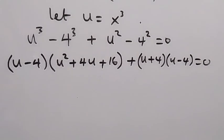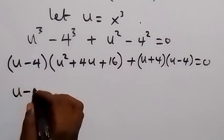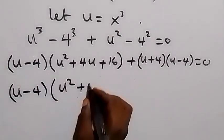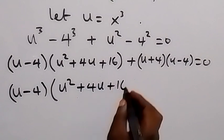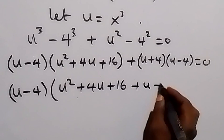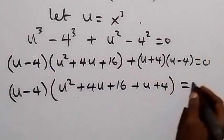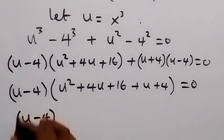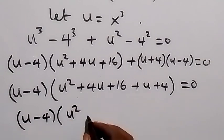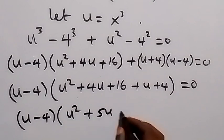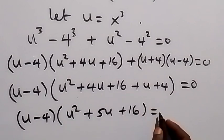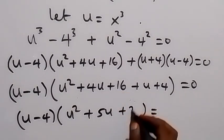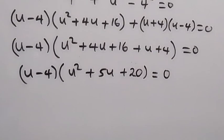We can see that (u minus 4) is a common factor. Taking it out, we have (u minus 4) times (u² + 4u + 16 + u + 4) equals zero, which simplifies to (u minus 4) times (u² + 5u + 20) equals zero.